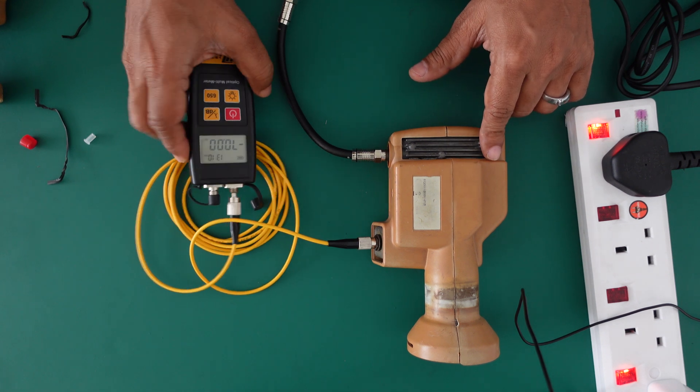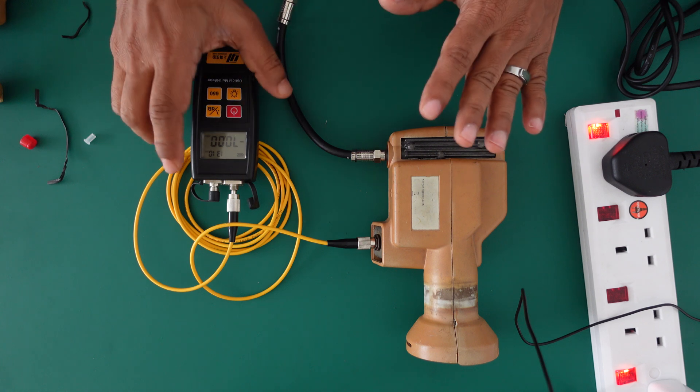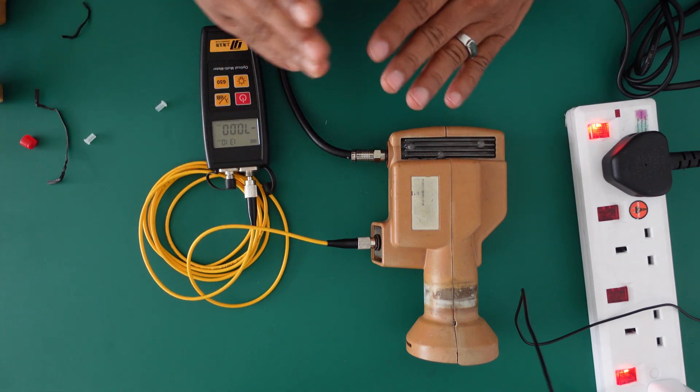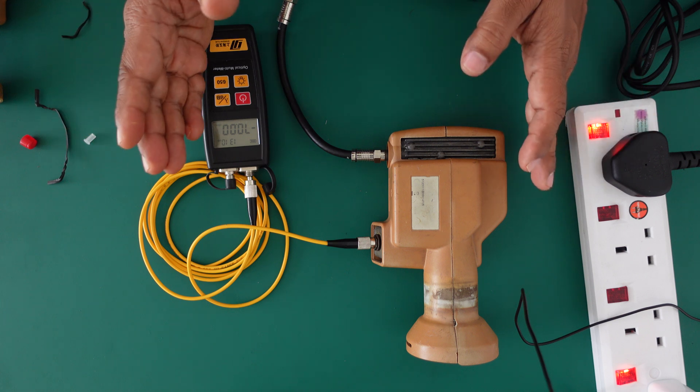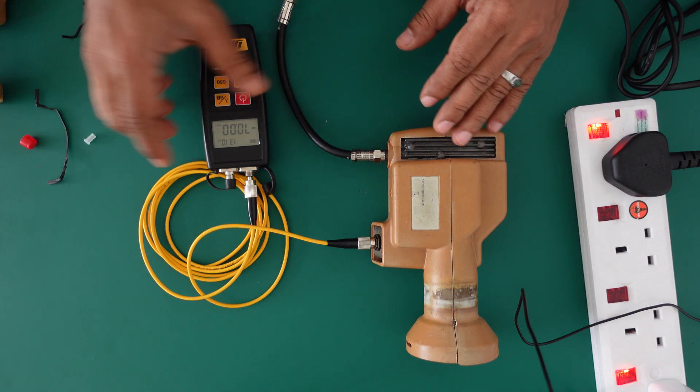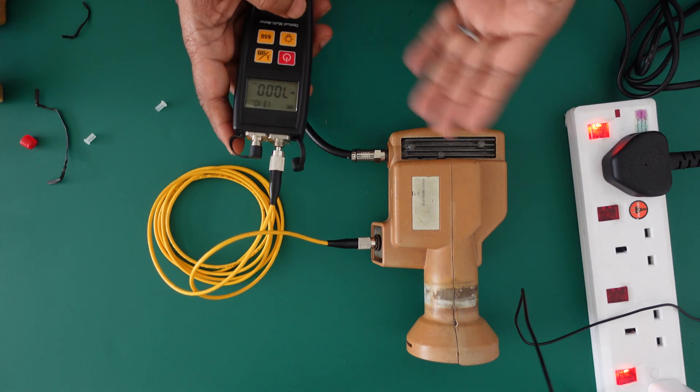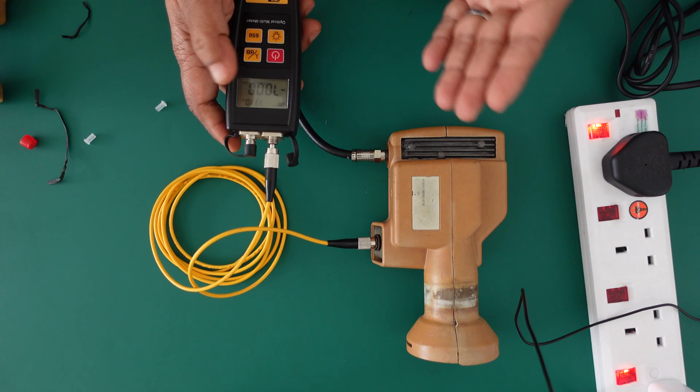Actually, this is the easiest way to check this LNB. You don't need to carry so many things to the rooftop. Just carry this power meter and the cable. You plug in, you already know the reading.